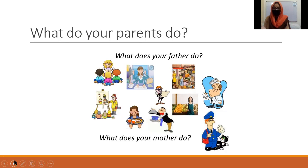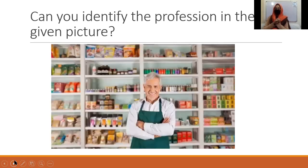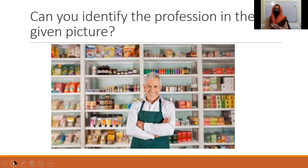Now let's look at the different professions we have in our neighborhood. All of you must have seen this type of person doing this job. Can you identify the profession of the person in the picture? The background is giving you a hint about what he is doing. Who is going to tell me what is the profession of this person? Yes, Abdullah — he's a shopkeeper. Very well done! How did you come to know that he's a shopkeeper? Because he is standing in a shop. Very well done! So who is going to tell me what are the duties of a shopkeeper?